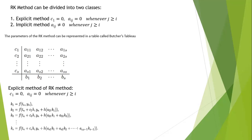For the internal stage storage: for k₁, we have f(t_n, y_n) since c₁ equals 0 and a₁₁ equals 0. For k₂, we have f(t_n plus c₂h, y_n plus h·a₂₁·k₁). For k₃, we have f(t_n plus c₃h, y_n plus h(a₃₁k₁ plus a₃₂k₂)), and so on. That is the internal stage storage.